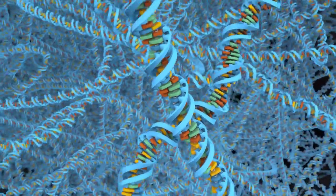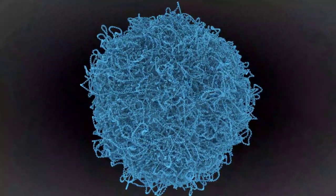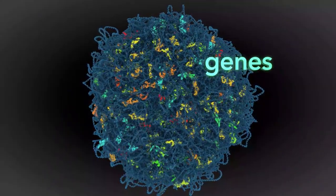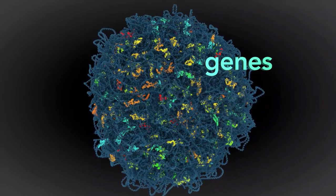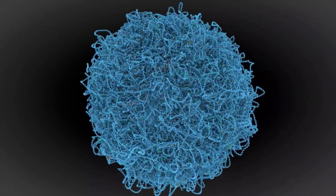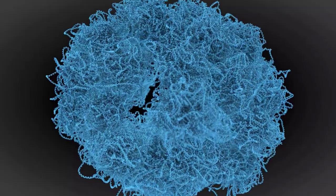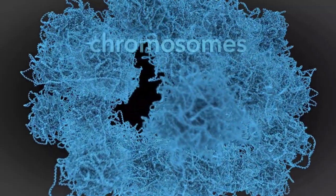Each of our cells holds billions of letters of DNA. Within this code are tens of thousands of genes that together make up the instructions for building a person. This massive amount of DNA is divided into smaller chunks called chromosomes.